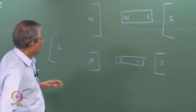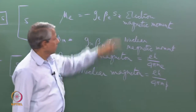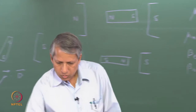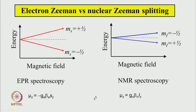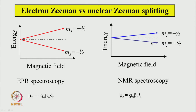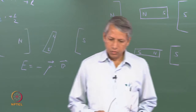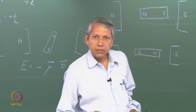When placed in a magnetic field, the energy levels for electron spin and nuclear spin look very similar. The difference is only in which spin state corresponds to the lower energy level: for EPR it is the m_s = -1/2 state, while for NMR it is the m_I = +1/2 state. Because of the ~2000-fold difference in magnetic moment magnitudes, the energy-level splitting for the same magnetic field is about 2000 times smaller for the nucleus than for the electron.